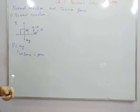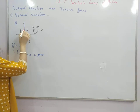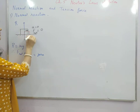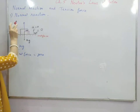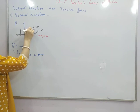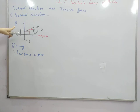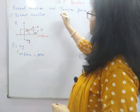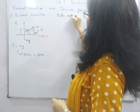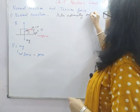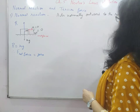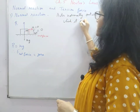One very important point to note is that normal reaction always makes a 90 degree angle with the surface. So if this is your surface, the angle which the normal reaction makes with the surface is 90 degrees. That's why this is also called normal reaction, because it is normally outward to the surface. So we can write in short: normal reaction acts normally outward to the surface.